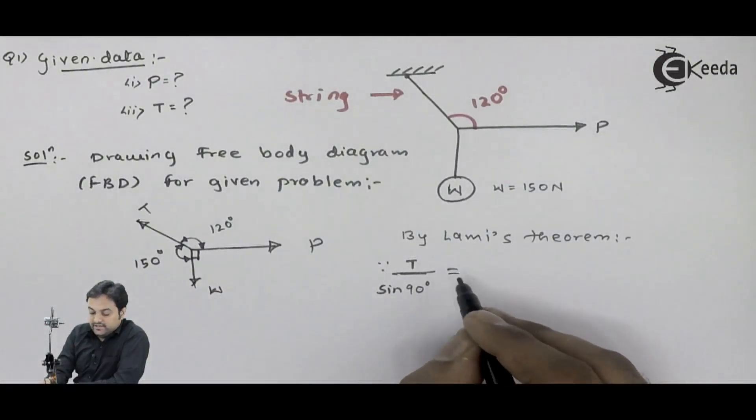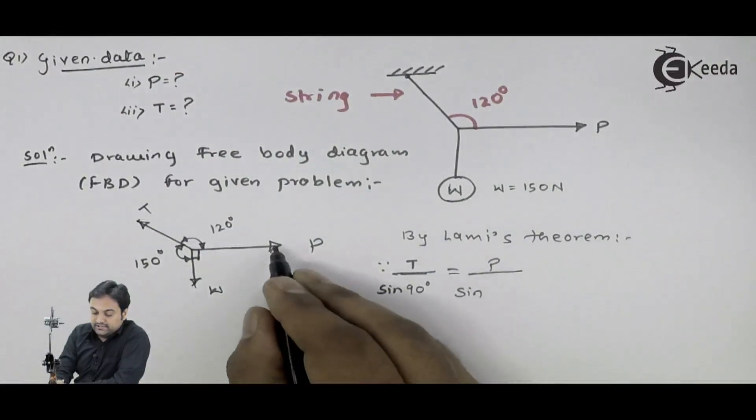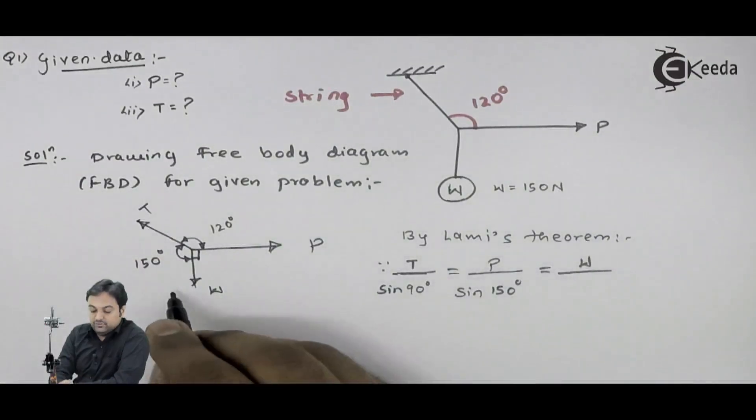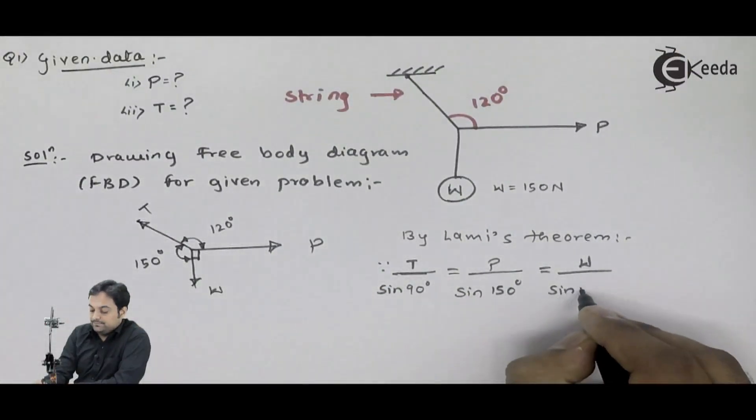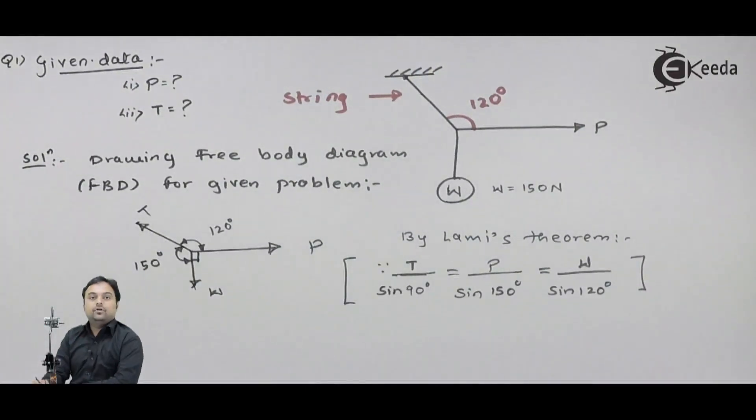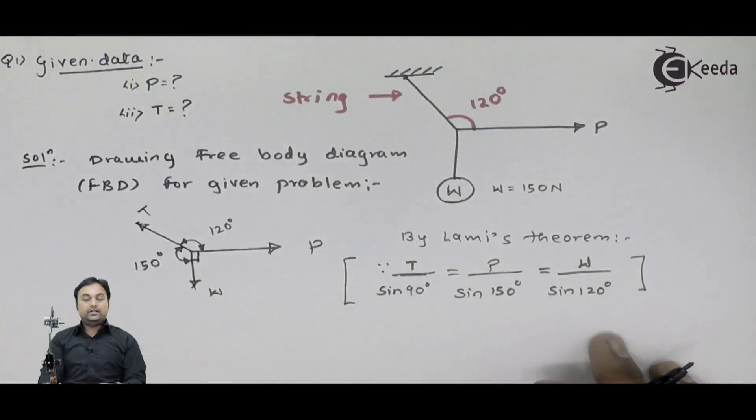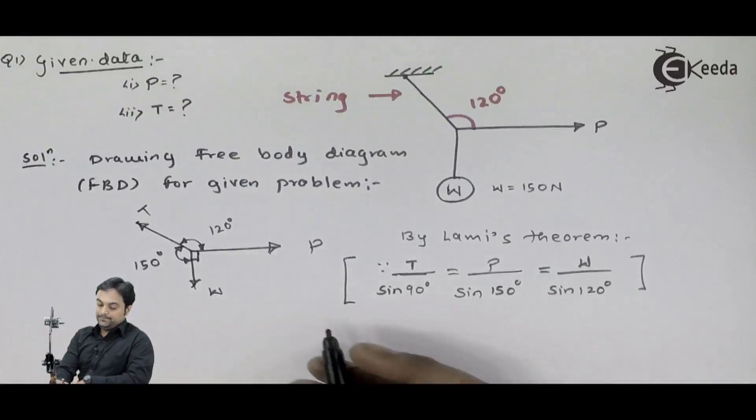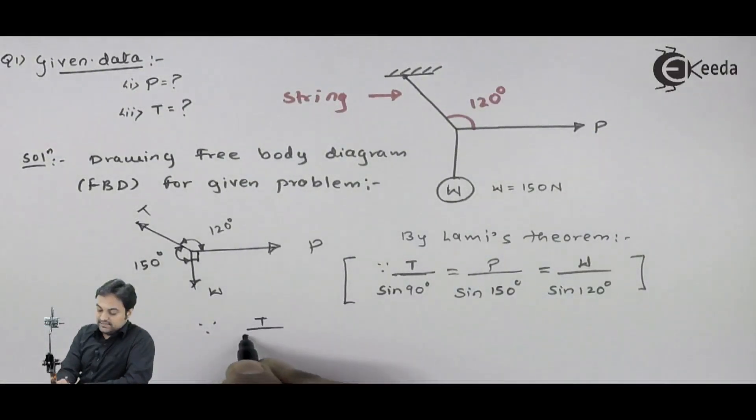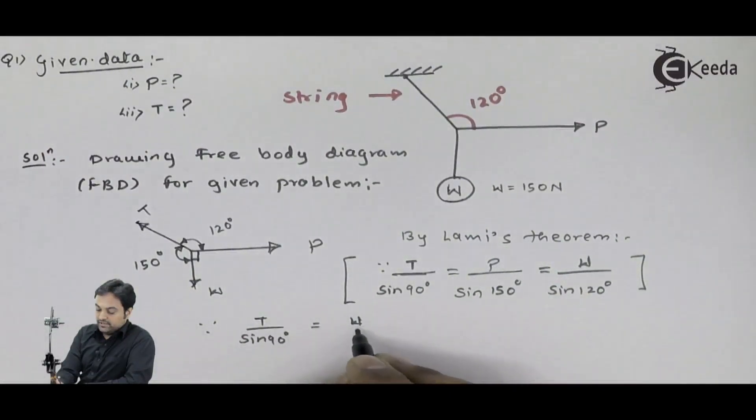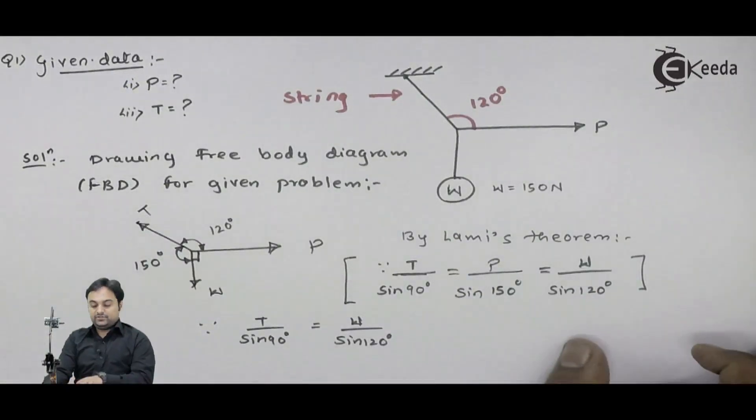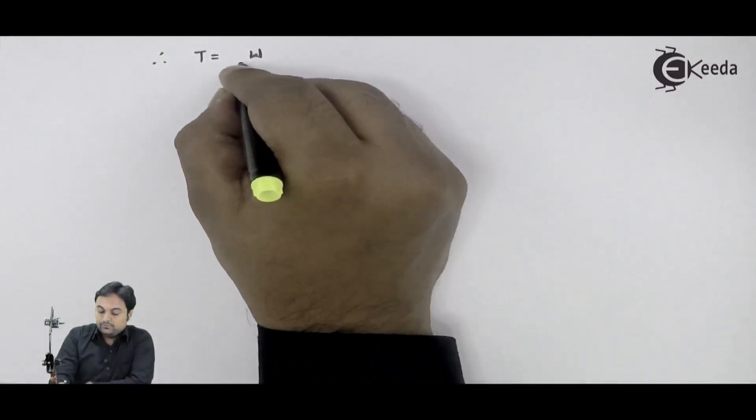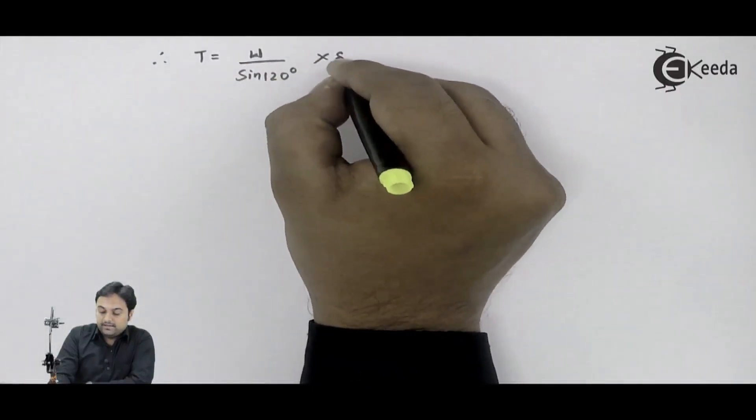P and W. If I take P in the denominator I should write the sine between T and W which is sine 150 degree. If I take W I will have to write the angle between T and P which is 120 degree. So here is my equation of Lami's theorem. Now we can use this at a time to calculate the value of T and P.